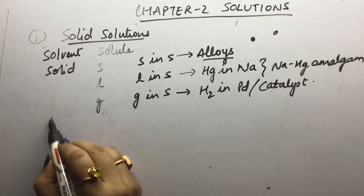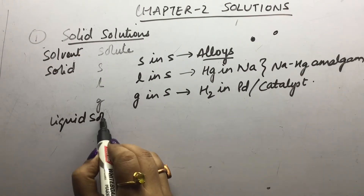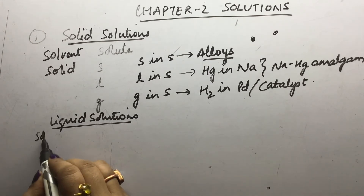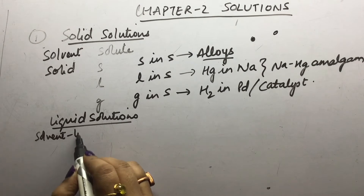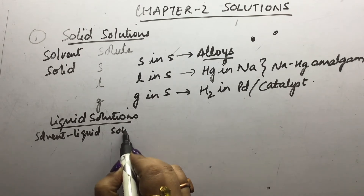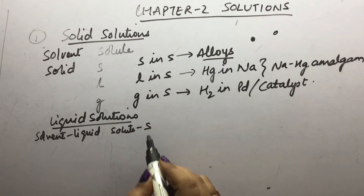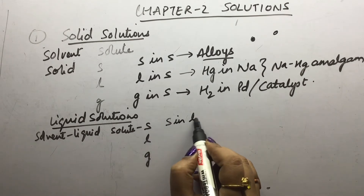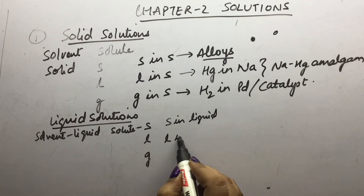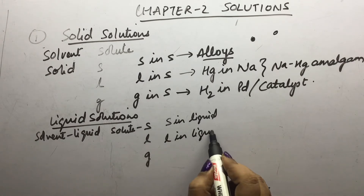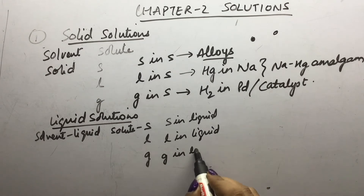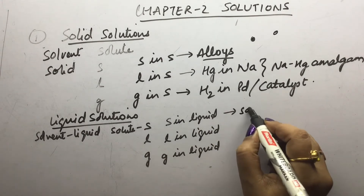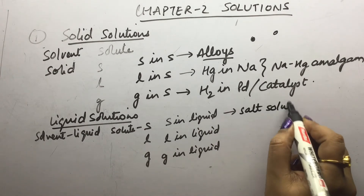The second type of solutions are liquid solutions. In liquid solutions, the solvent is liquid, but the solute can be solid, liquid, or gas. We call these solid in liquid, liquid in liquid, and gas in liquid solutions. Solid in liquid — as you normally do, we call it salt solution or sugar solution. Liquid in liquid — you mix ethanol in water to form a homogeneous mixture.